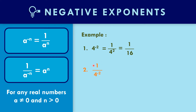In example number two: one over four to the negative two. Based on the rule, one over a to the negative n equals a to the n. The negative exponent is in the denominator, so it moves to the numerator as four squared. Four times four equals 16.